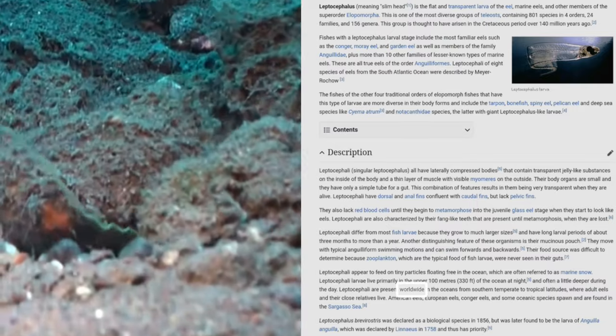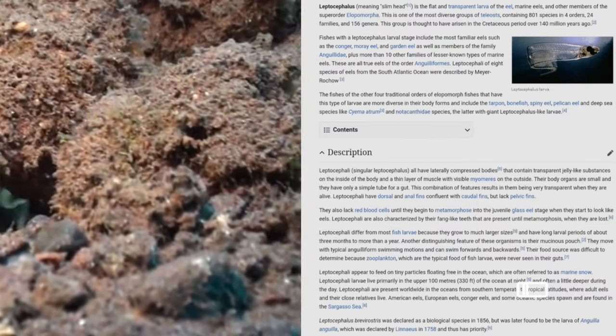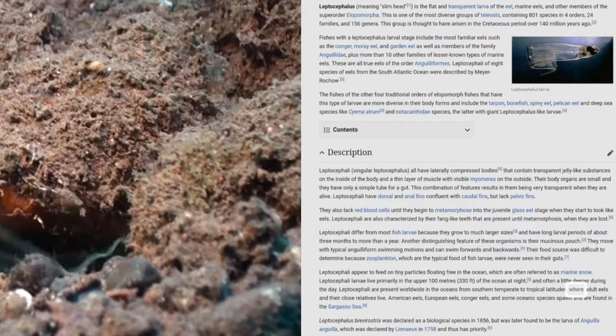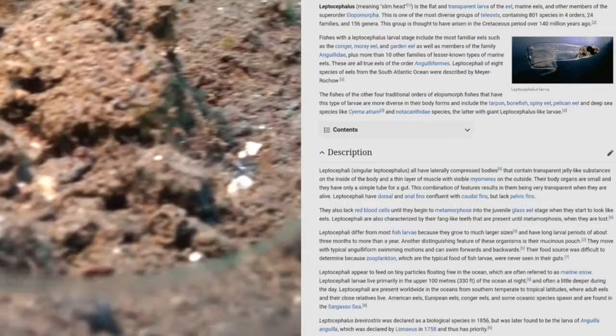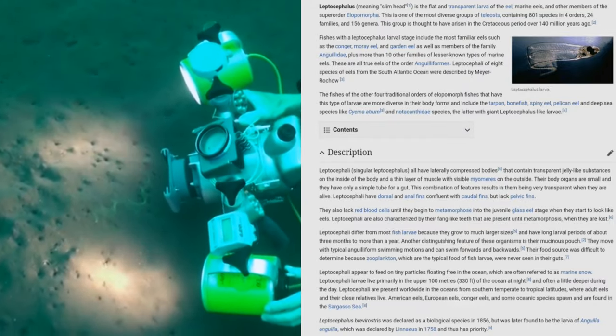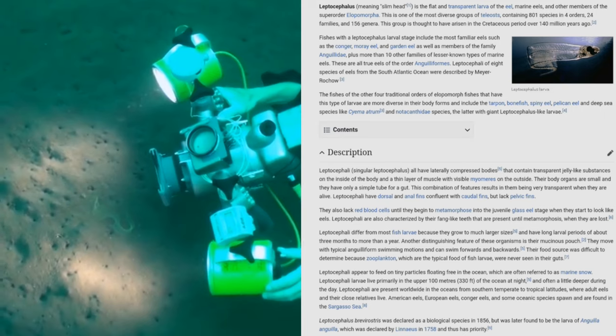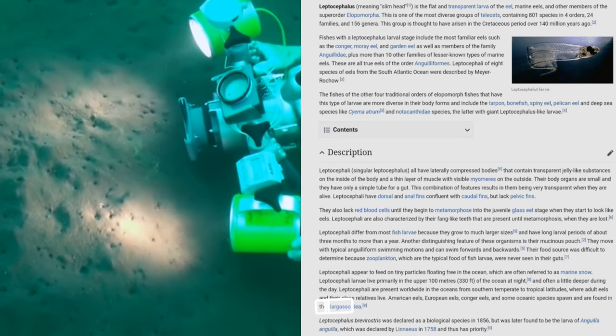Leptocephali are present worldwide in the oceans from southern temperate to tropical latitudes, where adult eels and their close relatives live. American eels, European eels, conger eels, and some oceanic species spawn and are found in the Sargasso Sea.